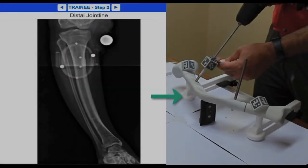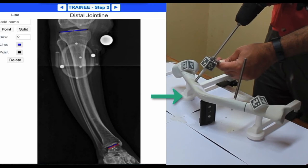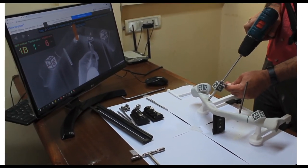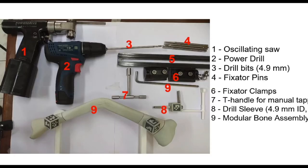The final and most important part of the training is the psychomotor training. For this, the trainee uses a web camera, few clamps and fixtures, and basic tools for drilling and cutting the bone models, as well as an external fixator implant.